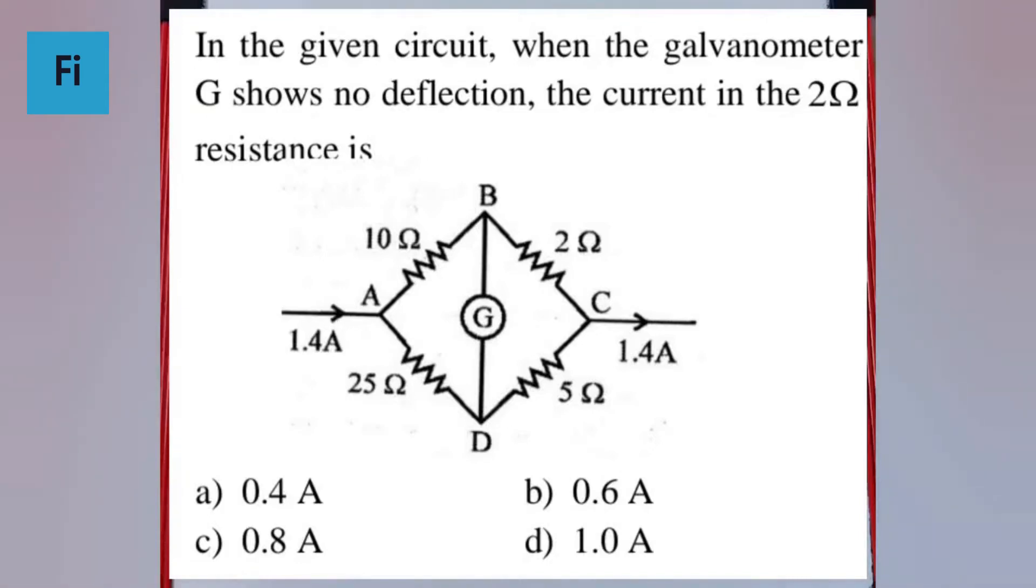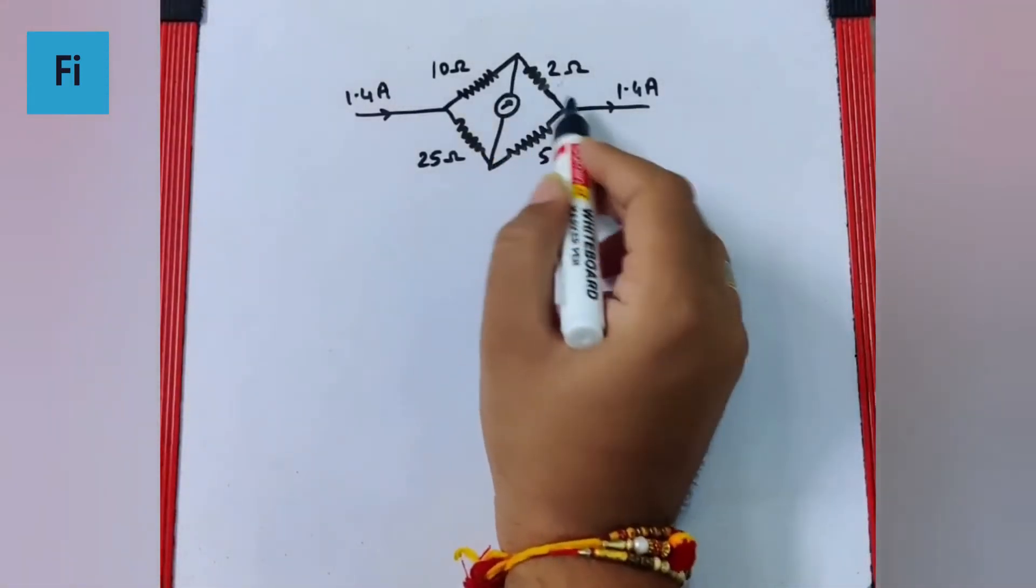The question says, in the given circuit, when the galvanometer G shows no deflection, the current in the 2 ohm resistance - you want the current in this branch.